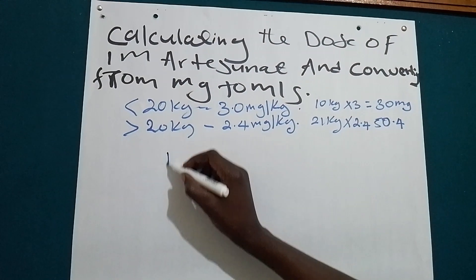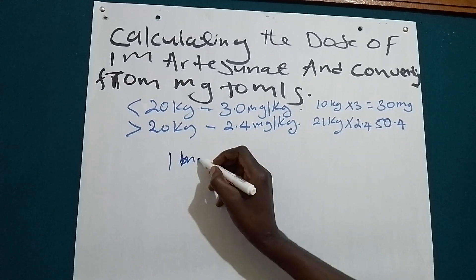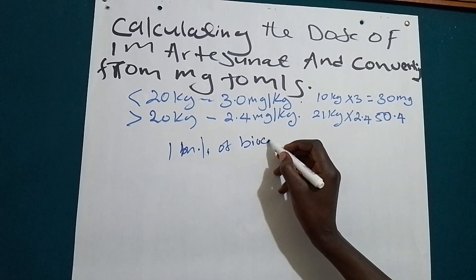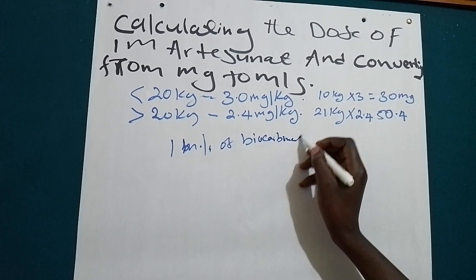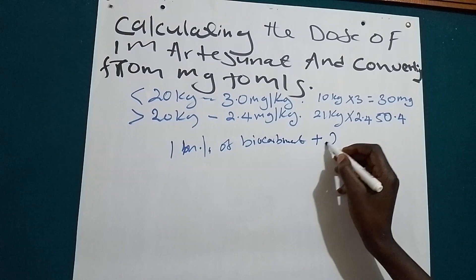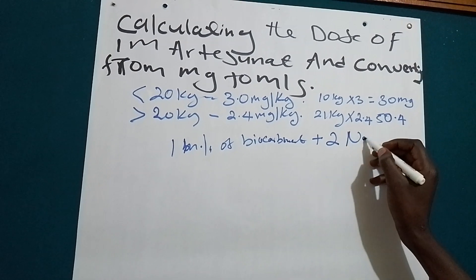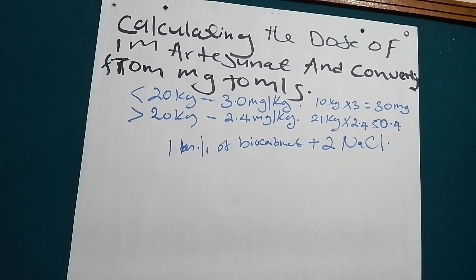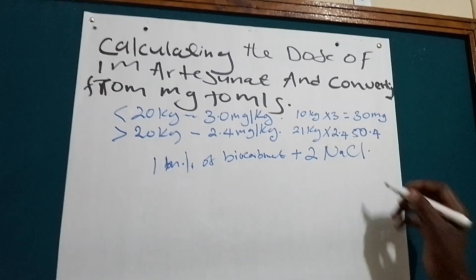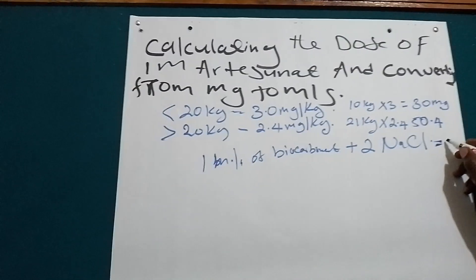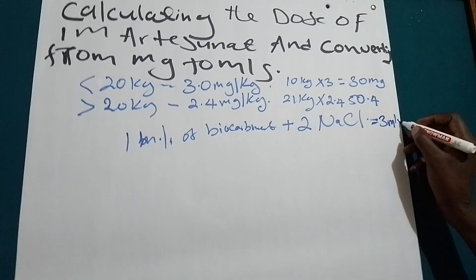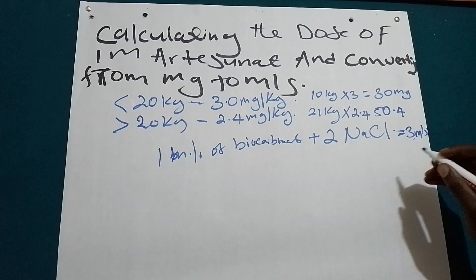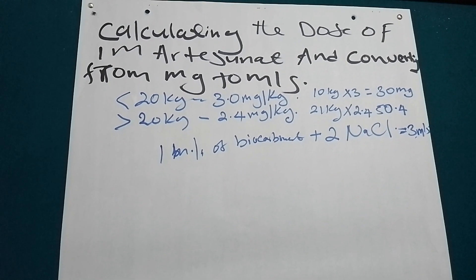But for IM, we add only 1 ml of bicarbonate and then we will only add 2 ml of sodium chloride. We will only aspirate 2 ml. So our 1 ml will become 3 ml. Remember, 3 ml. For IV it will make 6 ml, but for IM is 3 ml.